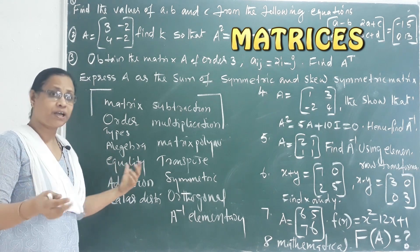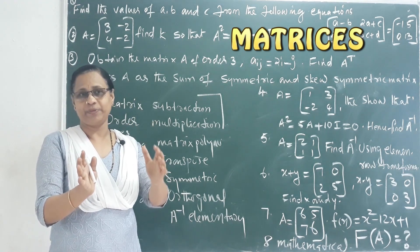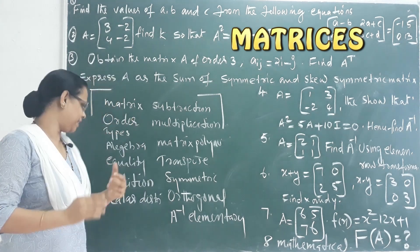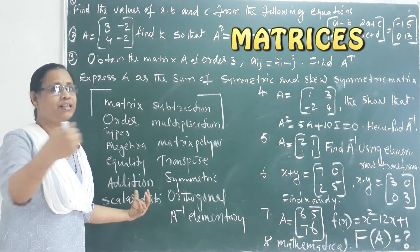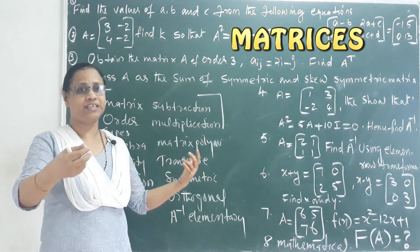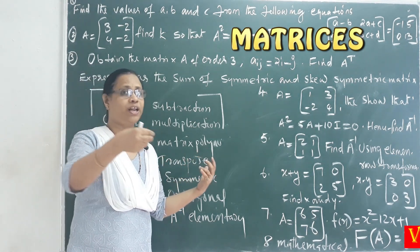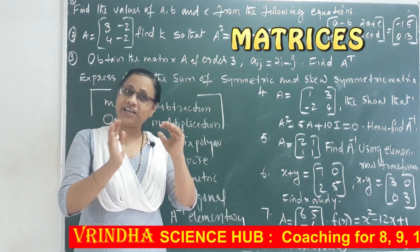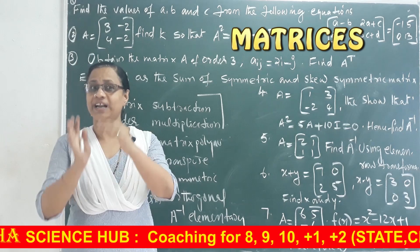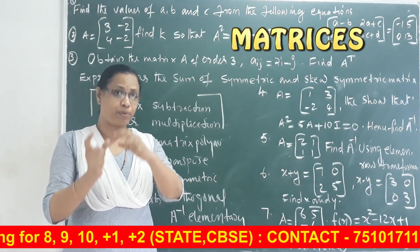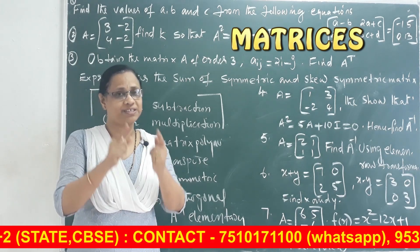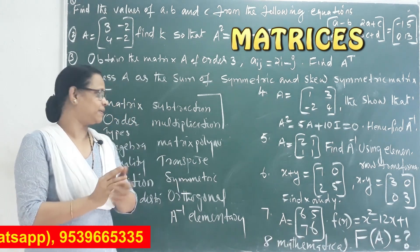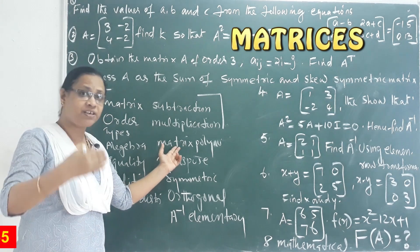The first thing is the equality of the matrix. Then what is the addition? What is the scalar multiplication? What is the notation of this matrix? Subtraction can be differentiation. Multiplication is important — the number of columns of the first matrix must be the same as the number of rows of the second matrix. That is the matrix multiplication.